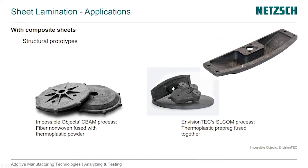You get a thermoplastic composite material that has quasi-isotropic properties. Within the layer, they're more or less isotropic because of the non-woven characteristics. Here you see a bigger part, also represented from EnvisionTech's SLCOM process, where thermoplastic prepreg is used to fuse layers together — the fiber already impregnated with the plastic, which is commonly used in composite manufacturing.